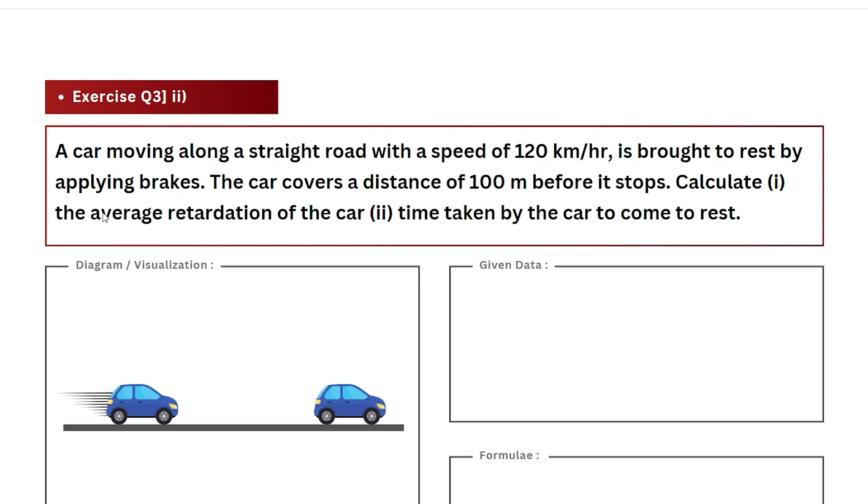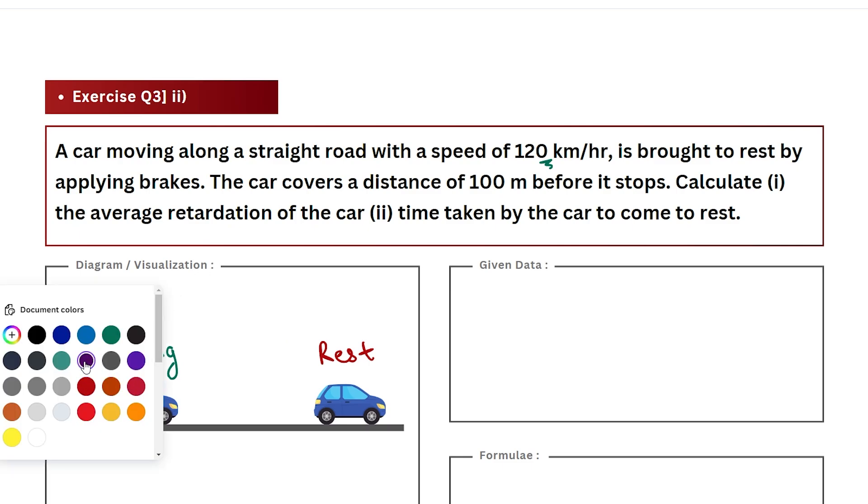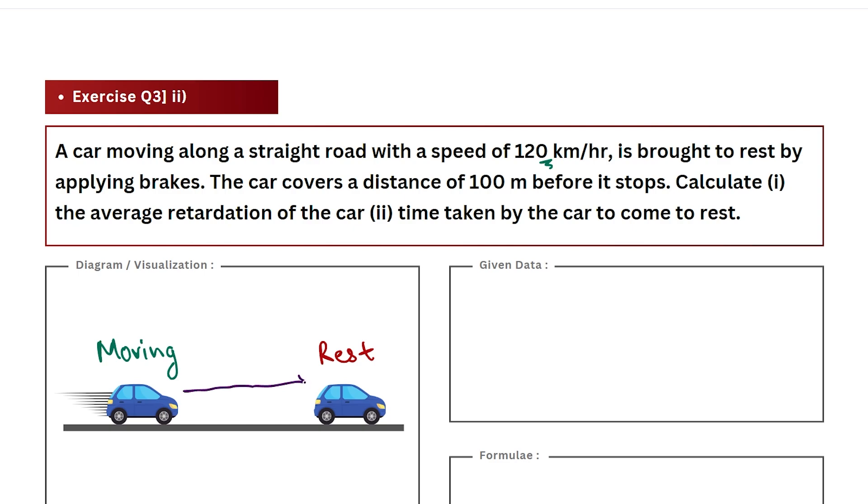The question states that we have a car which is moving initially with a constant velocity or speed. The driver applies brakes, and the car comes to a state of rest or halt. But this transition from moving to rest phase is not instantaneous as we see in day-to-day life. When you apply the brake, the car travels a certain distance and after that it comes to rest.